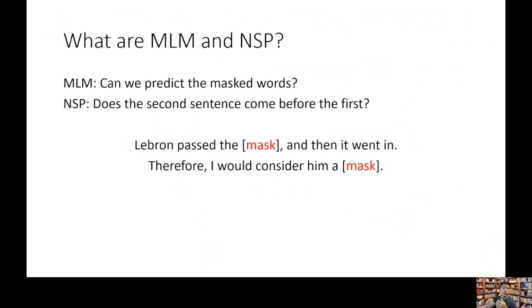How does BERT know which word to put next and how does it create context? There are two main tasks BERT is trained on: MLM, which is Masked Language Model, and NSP, which is Next Sentence Prediction. Together, training through this method, BERT is able to learn context and language.